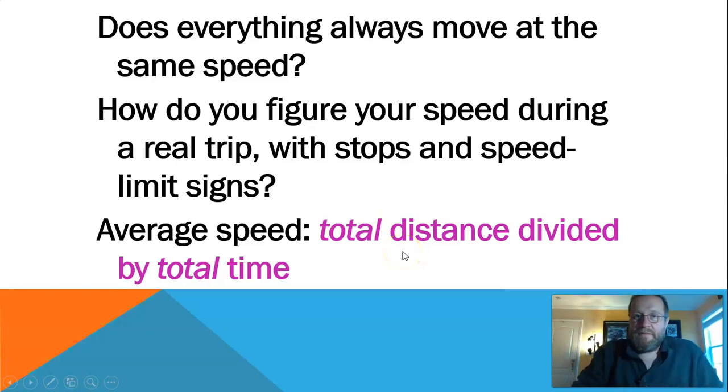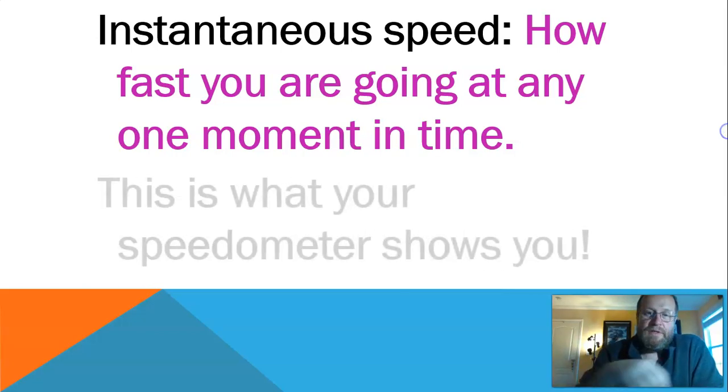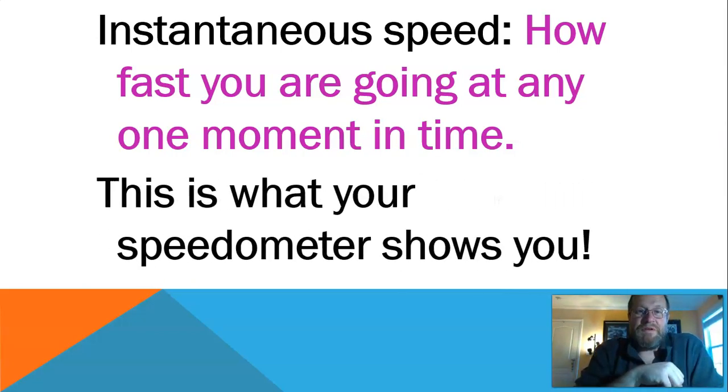At no point during that trip did your speedometer say you were going 50 miles an hour for any amount of time. So what's my speedometer showing me? This right here: instantaneous speed. How fast you're going at any one moment in time. What your speedometer shows you. So average speed is total distance divided by total time. Instantaneous speed is what your speedometer shows you at any one moment in time, your one instant.